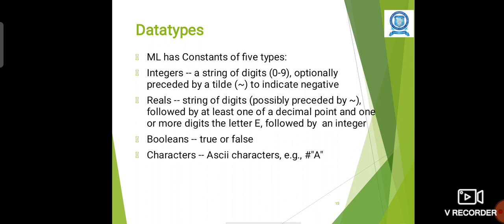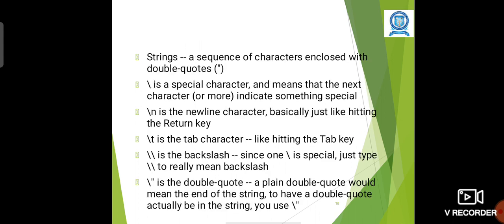Data types: Five types are available in ML: integers, reals, booleans, and characters. Also it supports strings. There are many special characters.